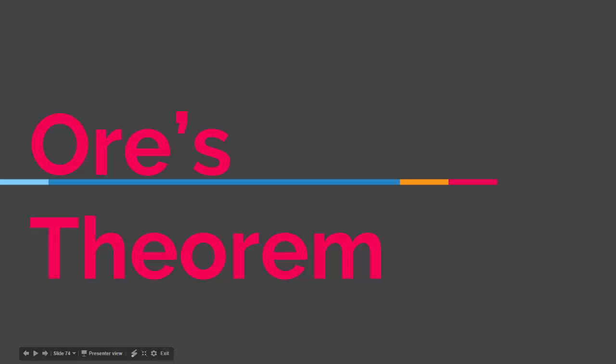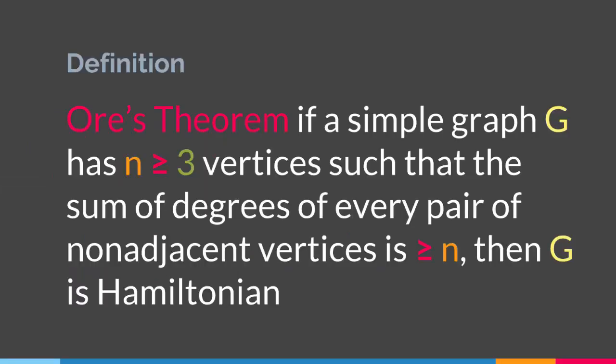Hello everyone. In this lecture we are going to talk about Ore's Theorem. In the previous lecture we talked about Hamiltonian paths and Hamiltonian circuits and we said that there isn't a particular theorem that can tell us whether a graph is Hamiltonian or not. Ore's Theorem is a sufficient condition for a graph to be Hamiltonian. Meaning if we can find the condition that Ore provides in our graph, it is sufficient for the graph to be Hamiltonian. However the opposite is not true — if that particular condition does not exist in the graph, it does not mean that the graph will not be Hamiltonian. That's why Ore's Theorem cannot be thought of as a theorem that tells us whether a graph is Hamiltonian or not. It just gives a sufficient condition.